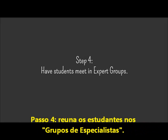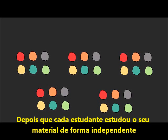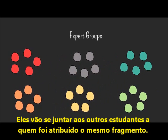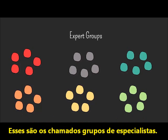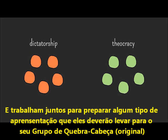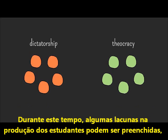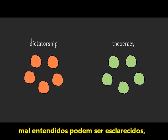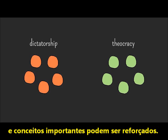Step 4: have students meet in expert groups. After each student has studied his or her chunk independently, they gather with all the other students who have been assigned to the same chunk — these are called expert groups. Within each expert group, students compare their ideas and work together to prepare some kind of presentation to give to their jigsaw group. During this time, gaps in individual students' knowledge can be filled, misconceptions can be cleared up, and important concepts can be reinforced.